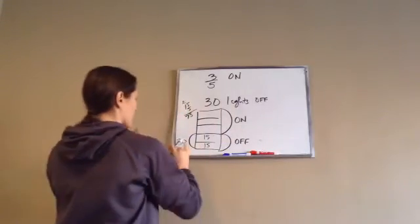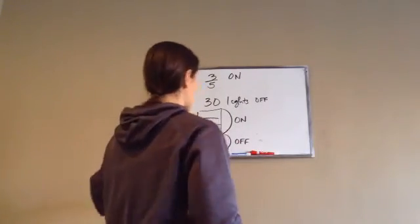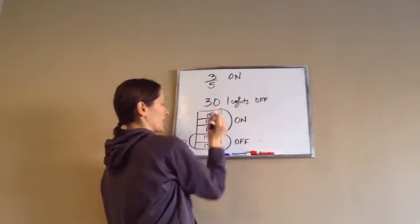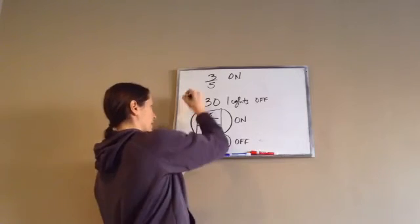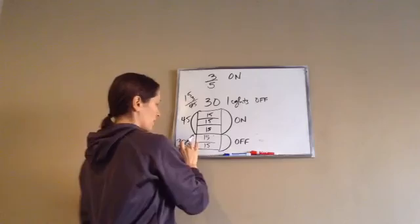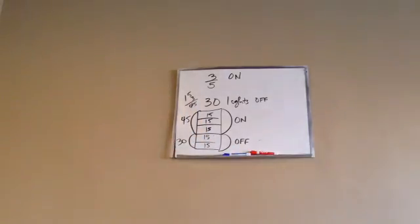How many lights were on? Ooh, tricky one. They weren't asking how many lights total there were. They were asking how many lights were on. So I'm just going to go 15, 15, and 15. So that's 15 times three, which is 45. 45 were on, 30 were off. That's lesson 71.